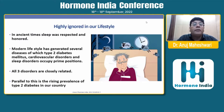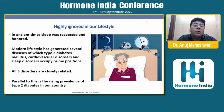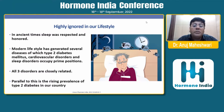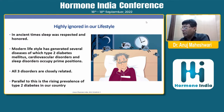In ancient times, sleep was very well respected and honored. But modern lifestyle has generated several diseases because of irregular sleep patterns, in which type 2 diabetes and cardiovascular disorders are very well connected with sleep disorders, and they are occupying a prime position in human life. These three disorders are closely related and they amplify each other. Sleep always plays an important role, and the rising prevalence of type 2 diabetes in our country may well be linked to sleep irregularity.